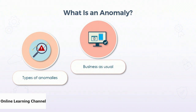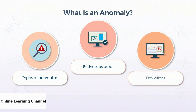An anomaly is a change to business as usual, and because business as usual fluctuates and moves, anomalies need to be understood as deviations from the expected behavior — and not just a metric that extends beyond the boundaries of an arbitrary threshold.